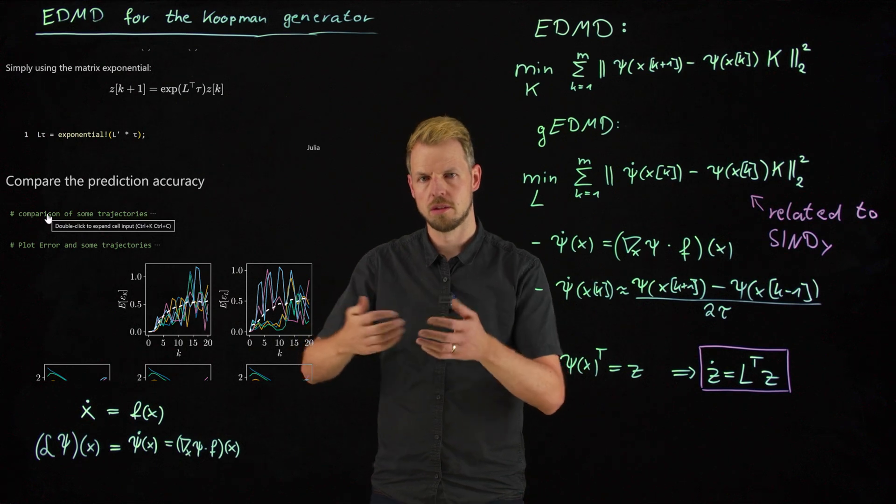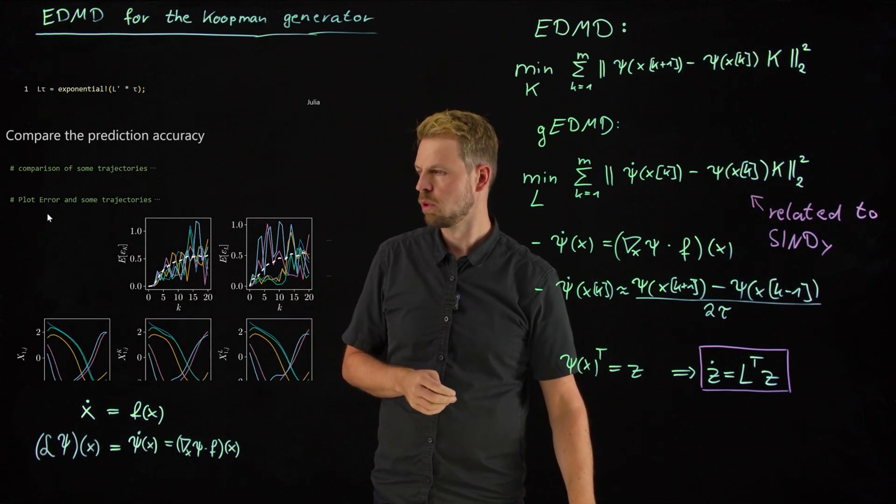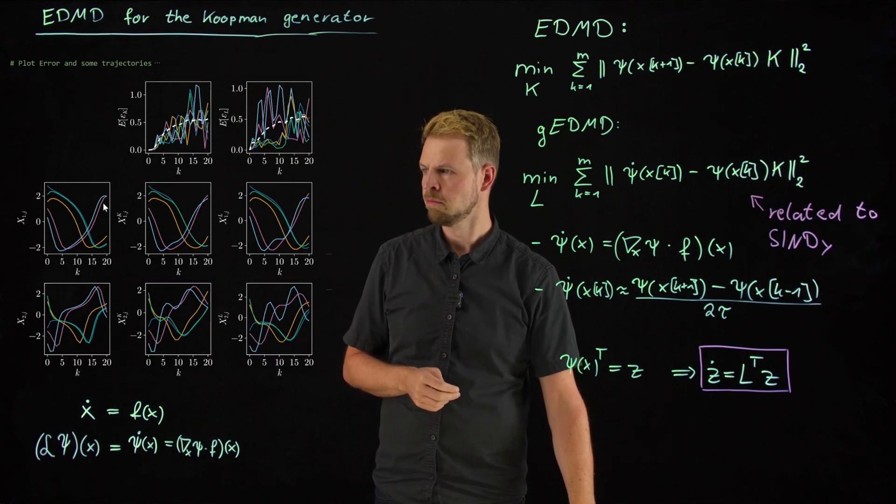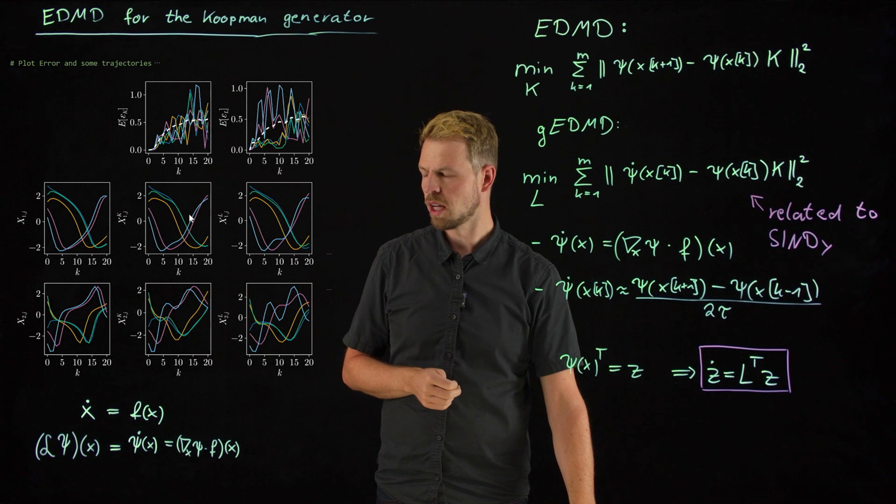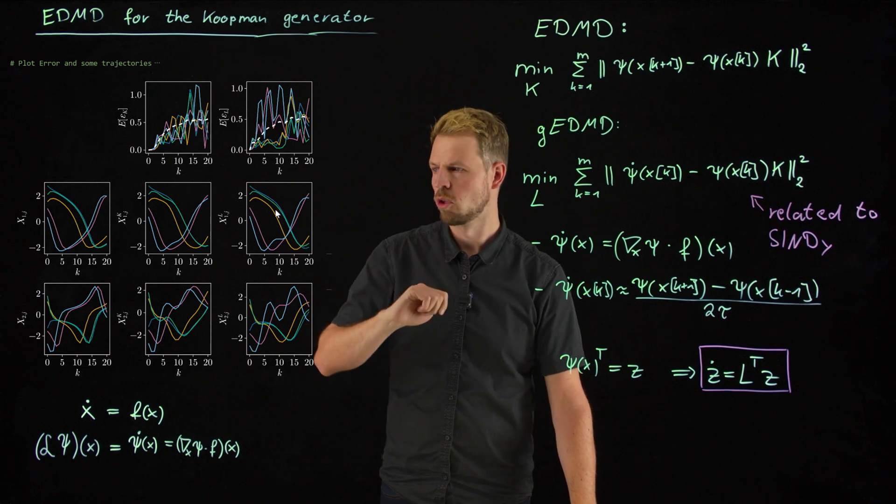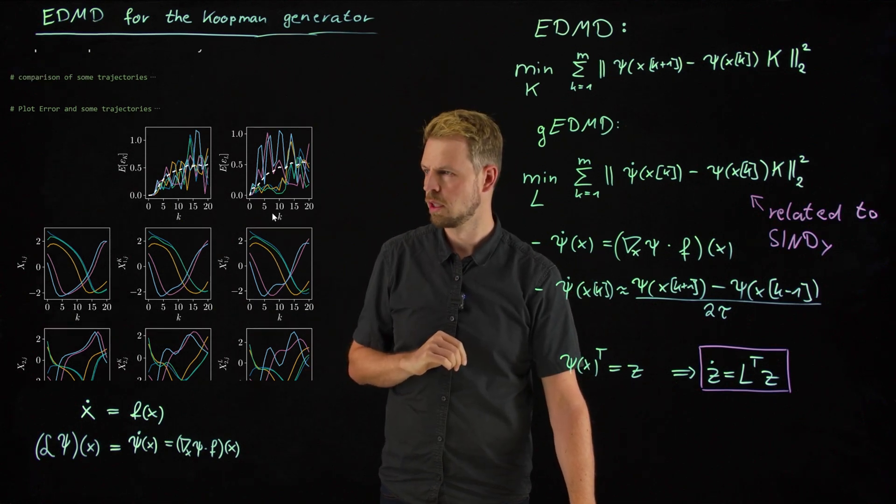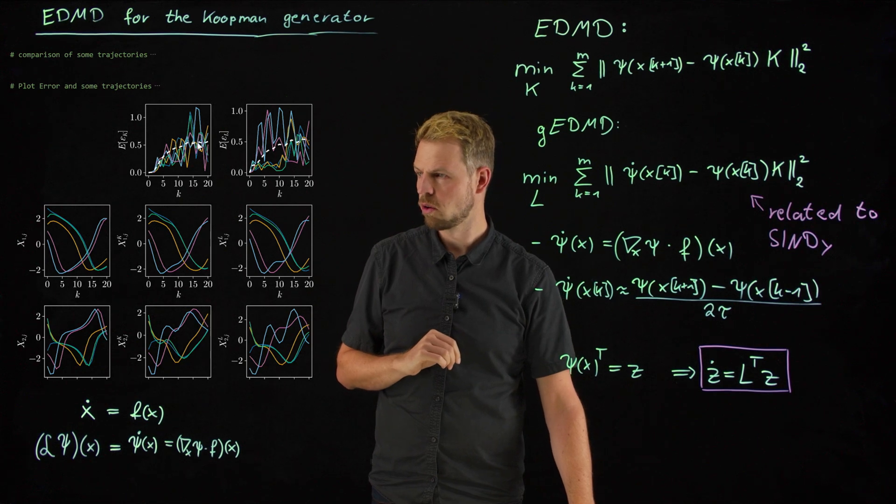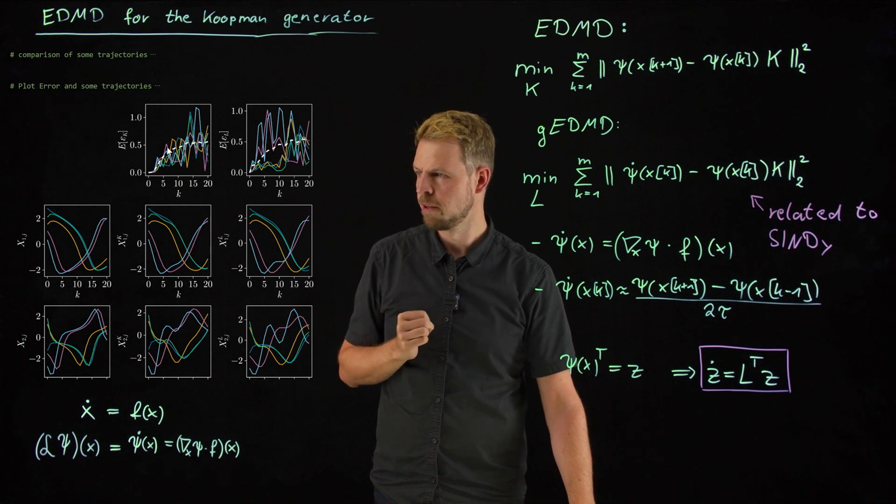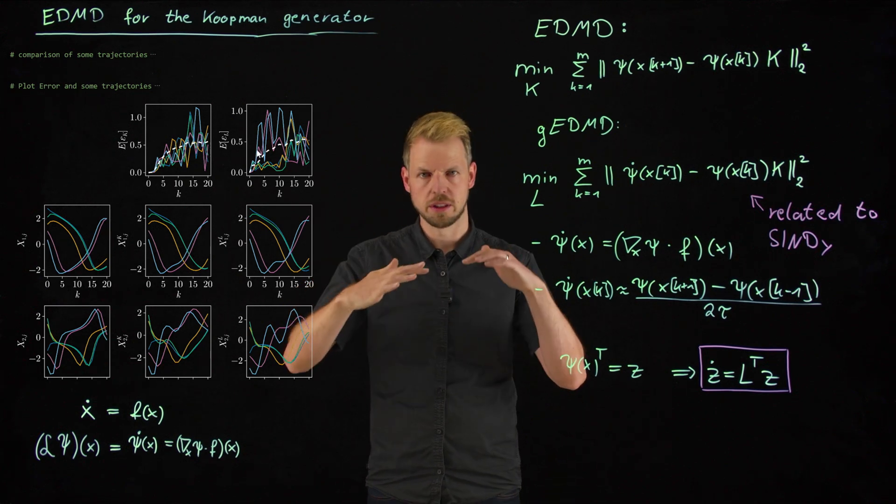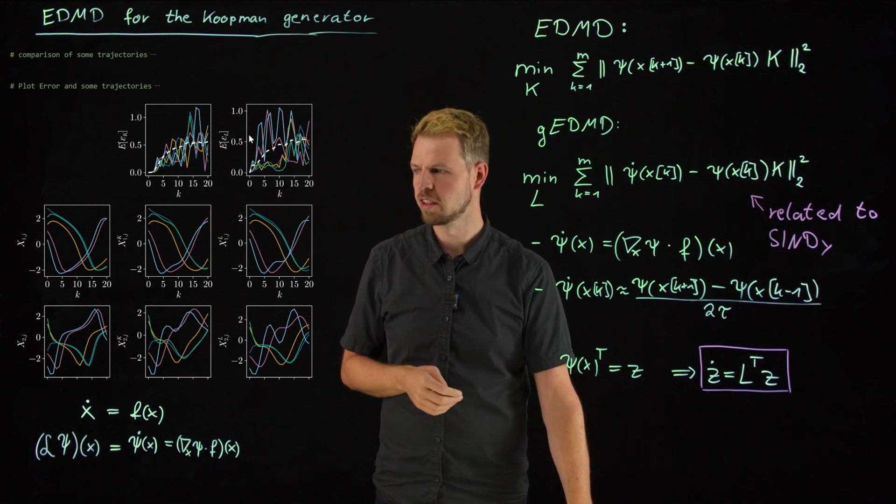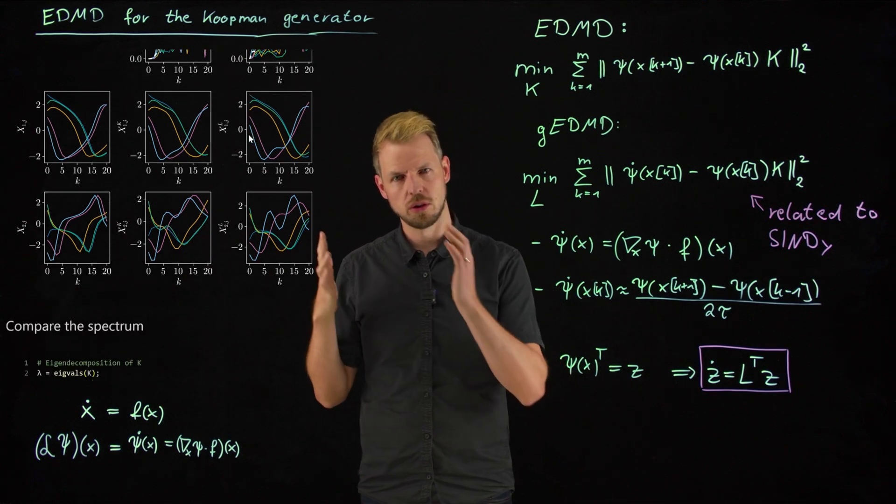And now what we can do is, I've hidden the code, but this is simply simulating a couple of random trajectories. What I'm plotting here is on the left hand side, the x1 and x2 component of these trajectories, the colors match. And in the middle column, I have the x1 and x2 state of the Koopman operator surrogate model. And on the right hand side, I have the x1 and x2 component of this generator based model that I have used. And in the top, you see the error of these trajectories in randomly initialized trajectories. And the wide dashed lines are the expectations, so the average over all my trajectories. And you see that the performance is actually very, very similar, which is not surprising.